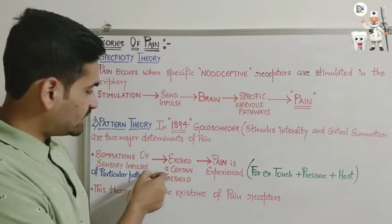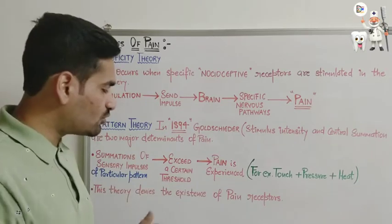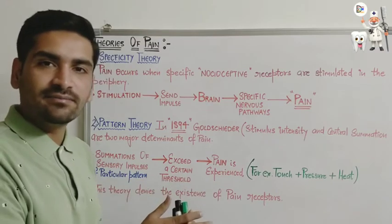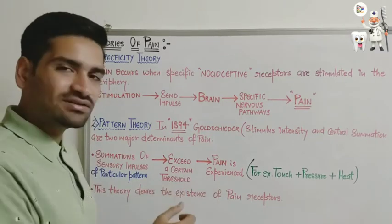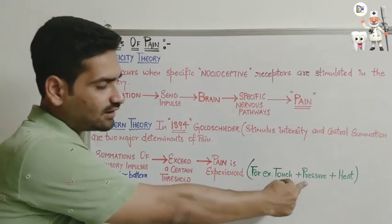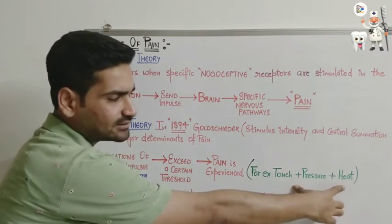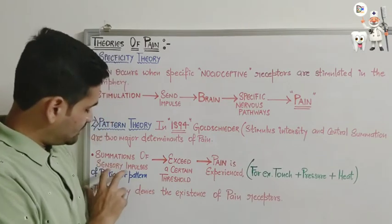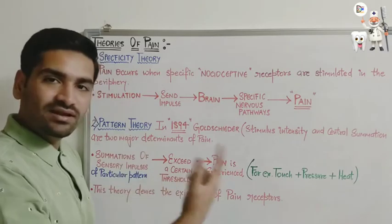If you add the impulses together, these will exceed a certain threshold. Whatever impulses are there, those impulses will cross a certain threshold, then pain is experienced. It is very simple: whatever summation of impulses occurs, whatever intensity the impulse has, along with all the impulses a patient is experiencing simultaneously — add them all together and that will cross a certain threshold. When the threshold is crossed, then pain will be experienced. For example, if I touch a patient and also apply pressure with giving a little amount of heat, this is the summation of all the impulses plus the intensity of impulses, which will cause the sensation of pain.